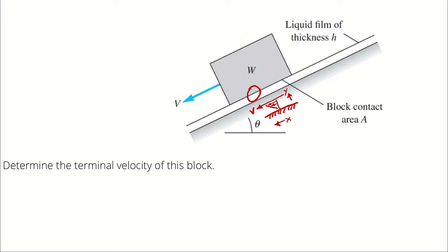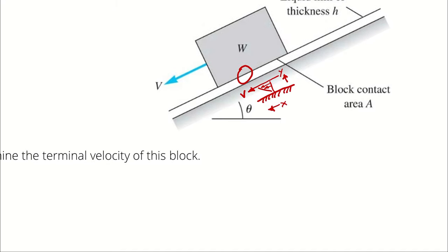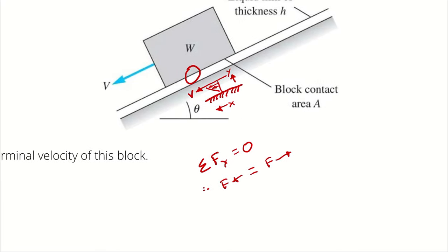If the block is in equilibrium, which it would have to be for it to have reached terminal velocity, then the sum of forces in the x-direction are going to equal zero. Therefore, the weight of the block pulling it down the incline plane is going to equal the resistive force of the fluid. We are neglecting all air drag and any other drag forces that could be acting on the block.